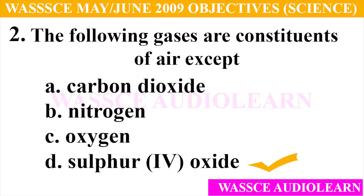Question 2: The following gases are constituents of air except — A. Carbon dioxide, B. Nitrogen, C. Oxygen, D. Sulfur dioxide. And the answer is D, sulfur dioxide. The following gases are constituents of air except sulfur dioxide.